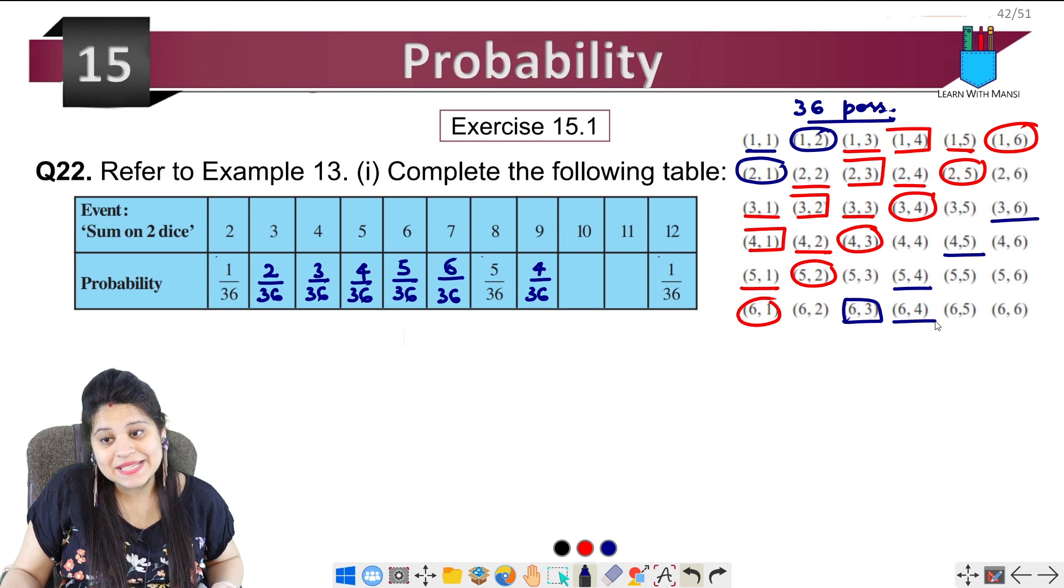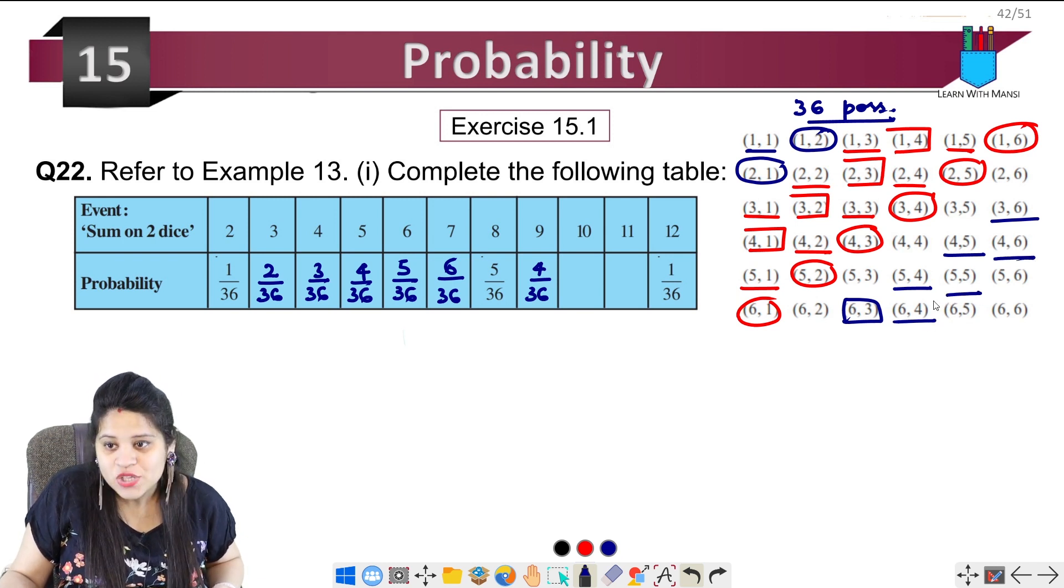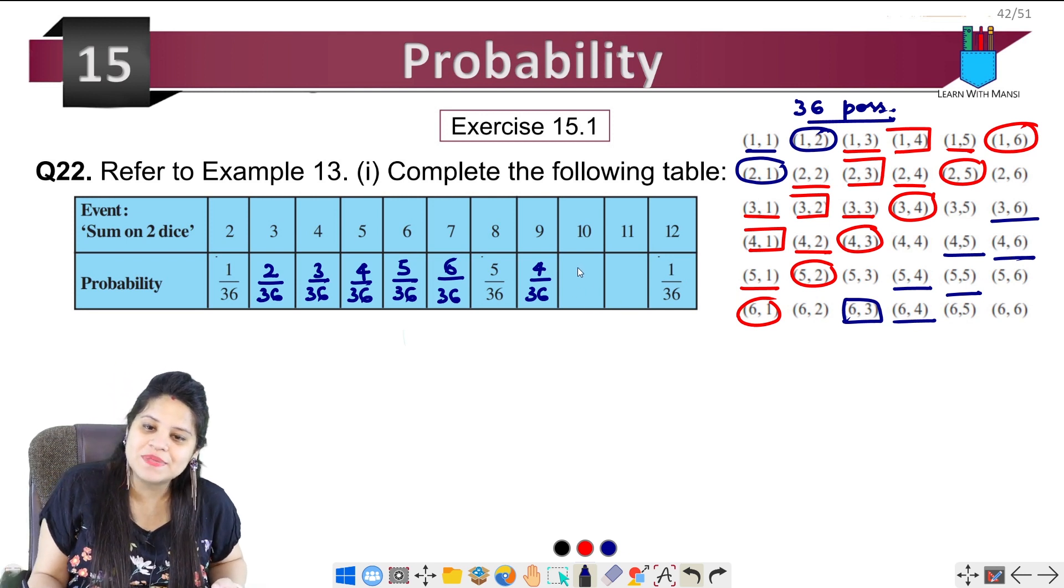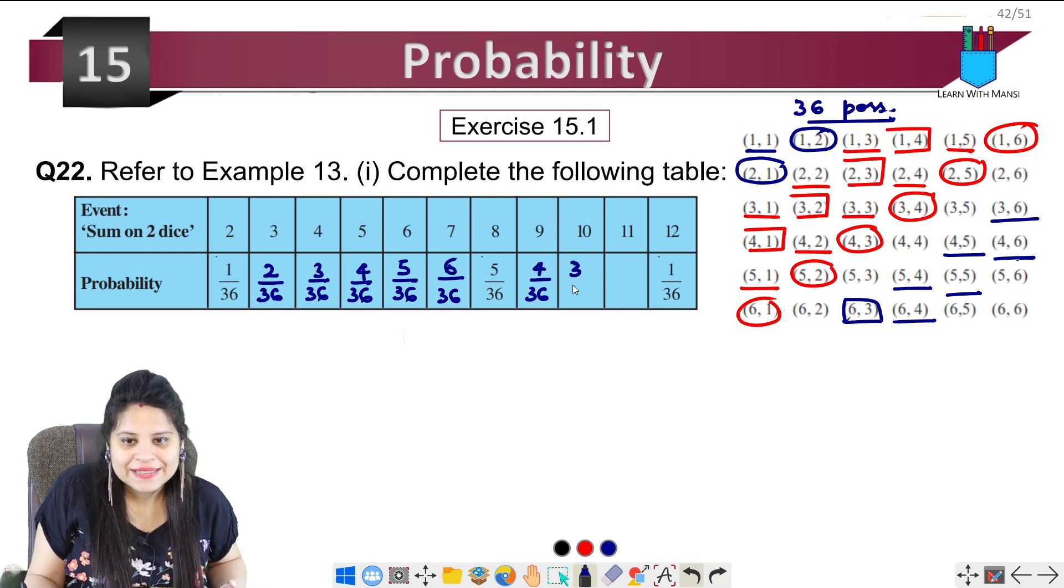For 10: 6 plus 4 is 10, 5 plus 5 is 10, 4 plus 6 is 10. So simply, I can see diagonally here. There are 3 outcomes. So 3 upon 36. 3 is our favorable outcome upon 36.